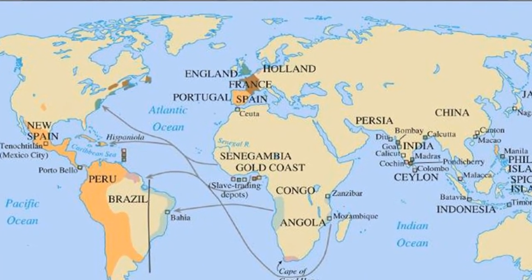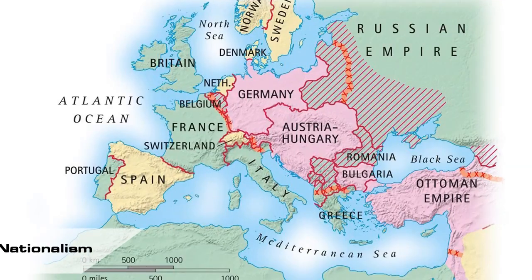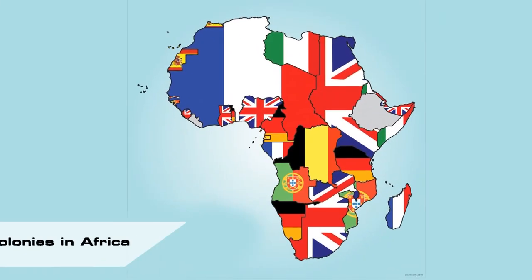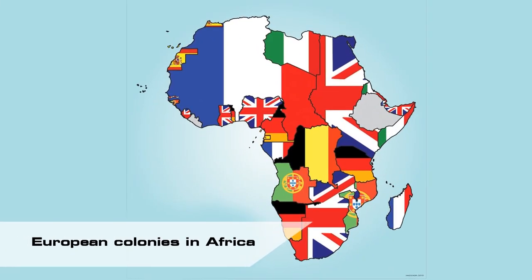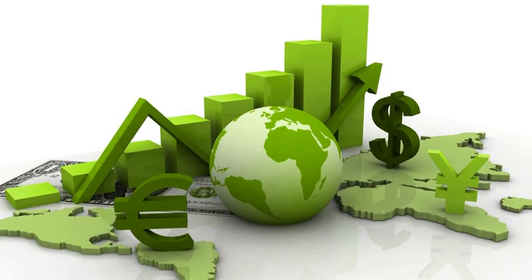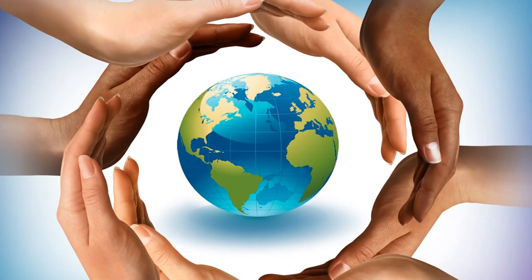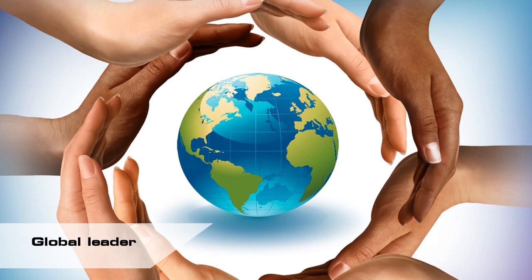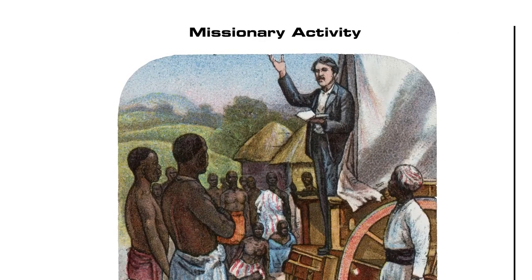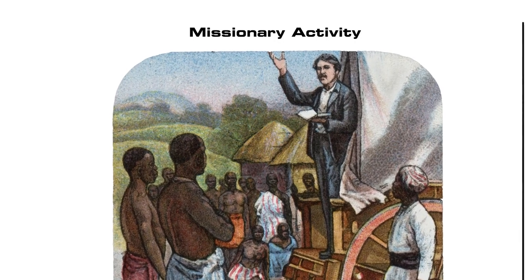Three: nationalism. As European countries fought for more land — because land was money — they scrambled for new colonies in Africa. Part of this was the desire to share in global profits, but another reason was nationalistic: colonizers took pride in their country and wanted it to be a global leader. Four: missionary activity. Northern Africa had been Islamic since the Umayyads.